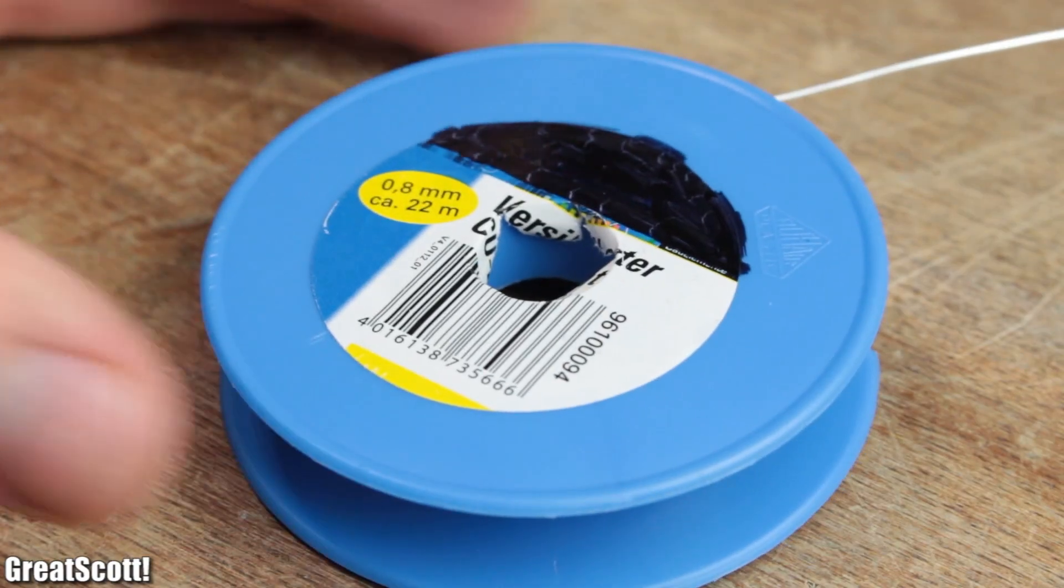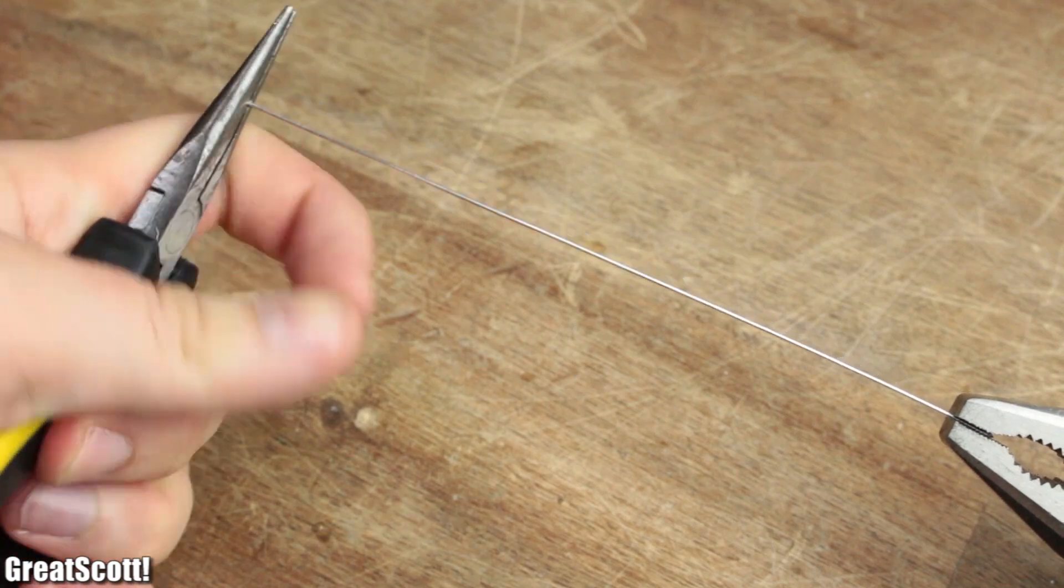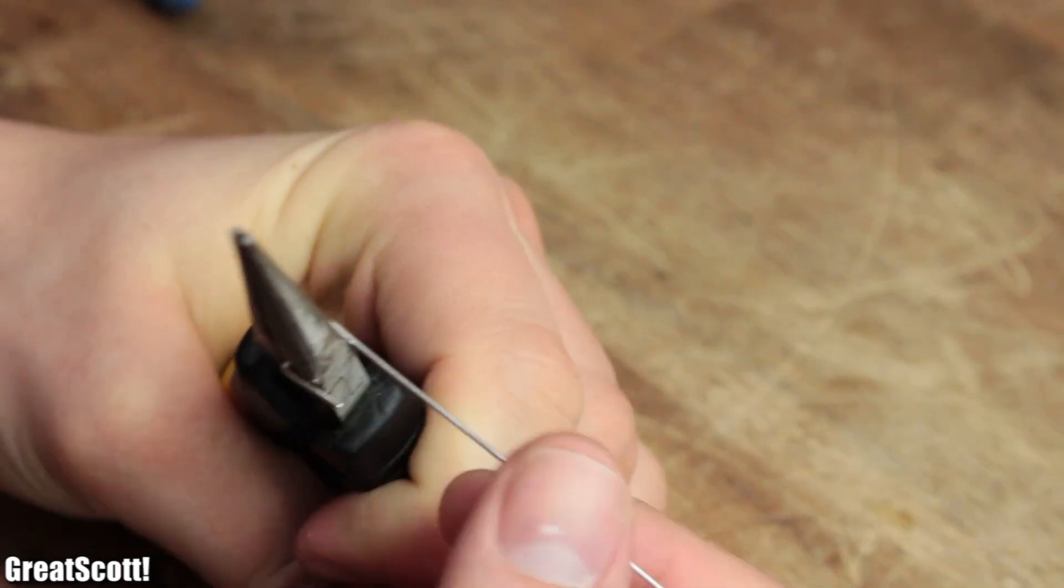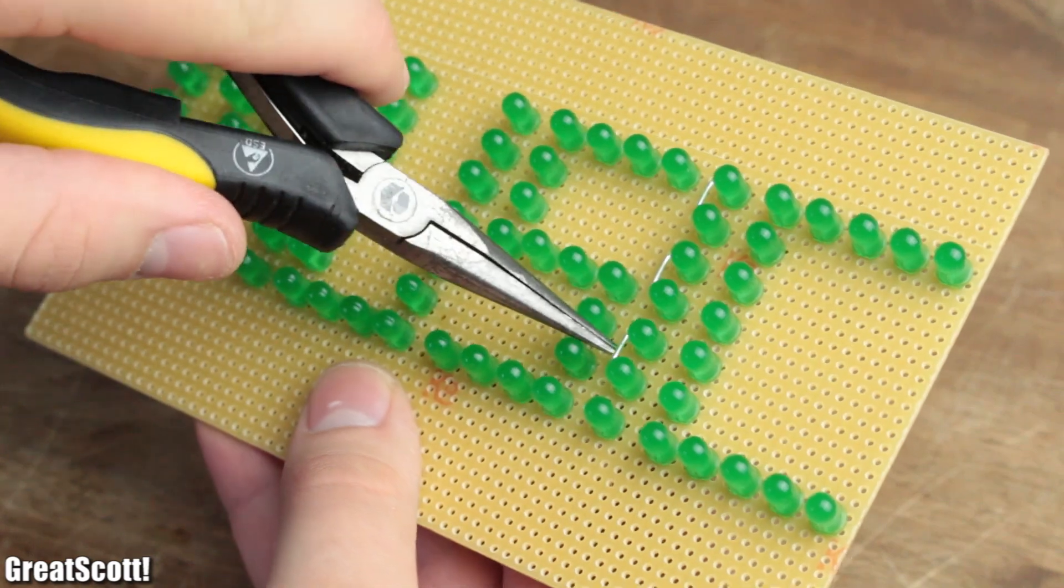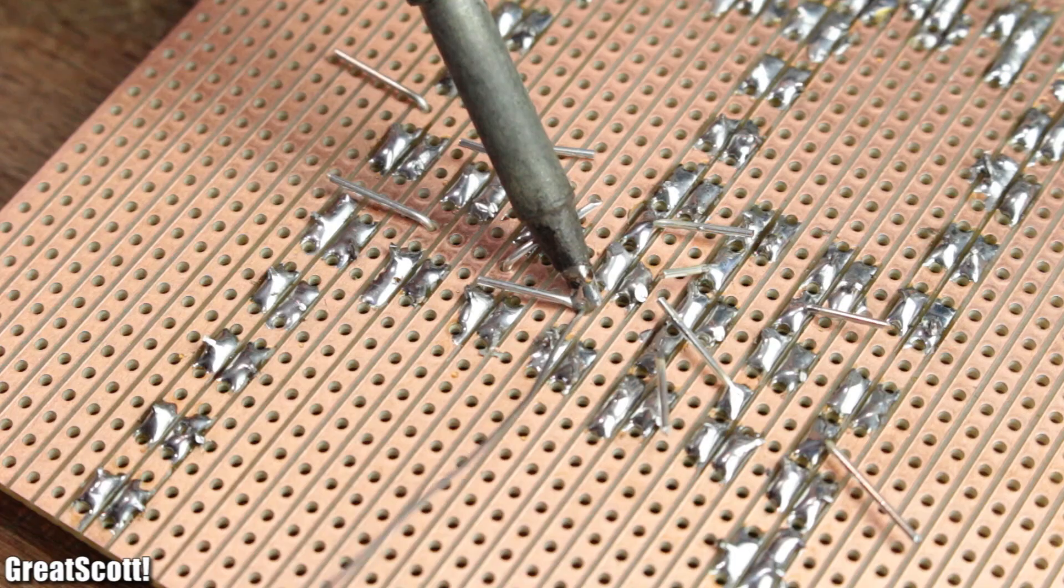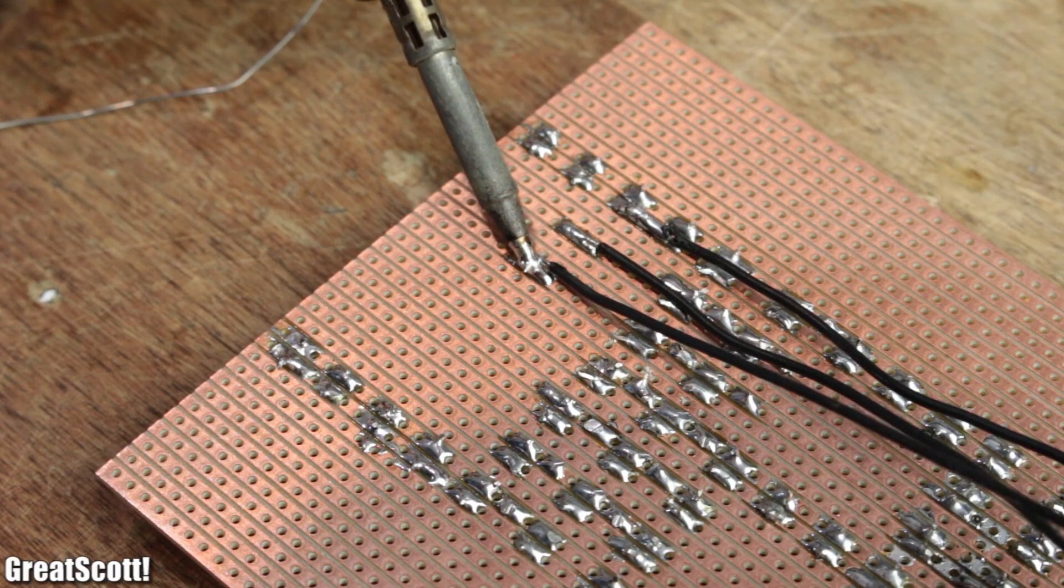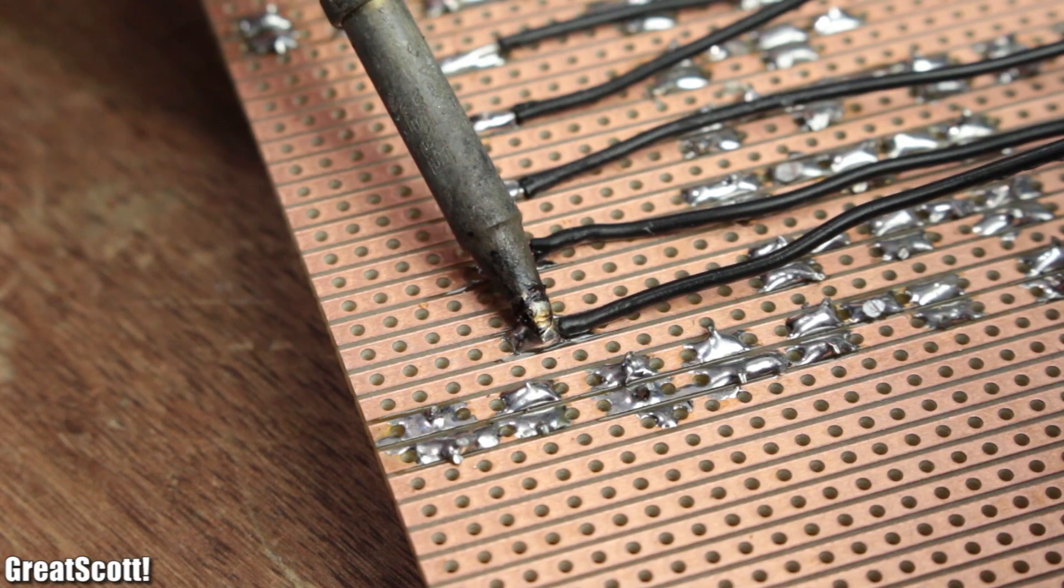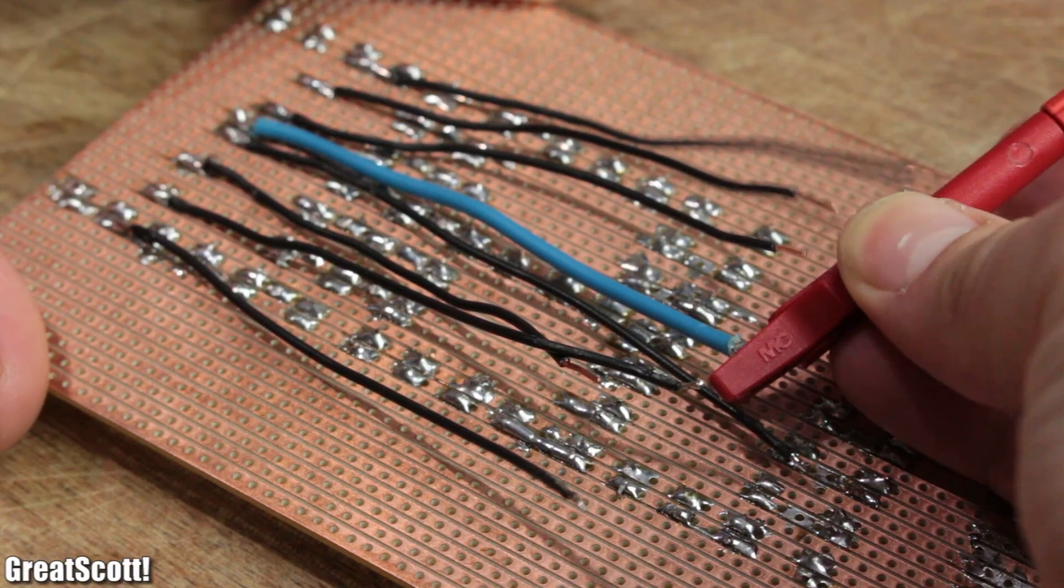Afterwards I got myself 0.8 millimeter silvered copper wire, straightened it out with the help of two pliers, and formed six bridges which jump across two holes of the stripboard. I used those around the letter I to connect all the anodes of each row together to create a so-called common anode. At the end I soldered a wire to each cathode line and one extra wire to the common anode, and the LED sign is complete.